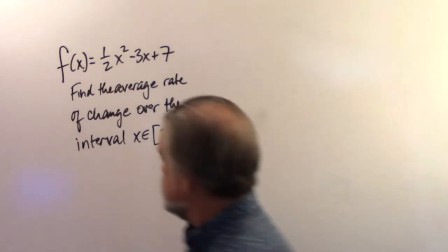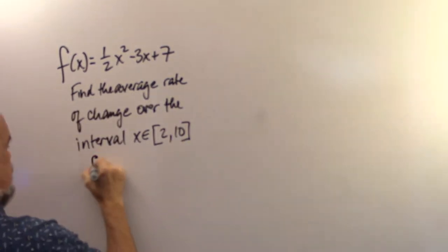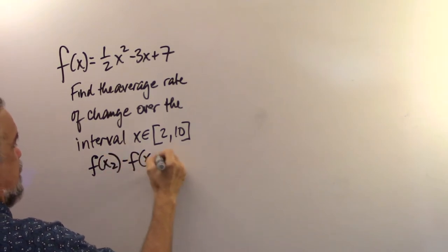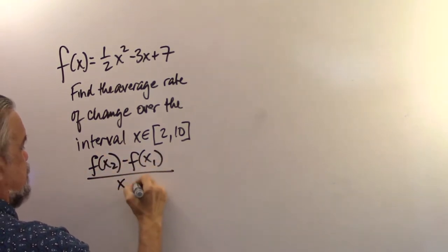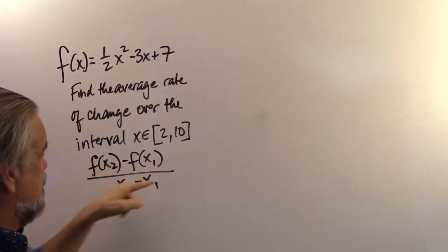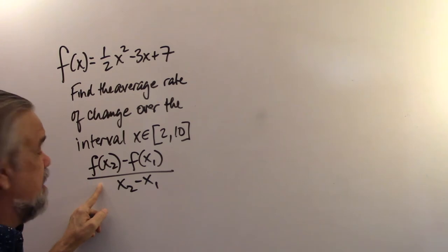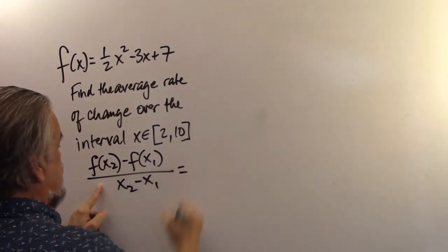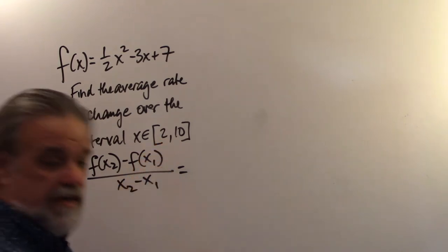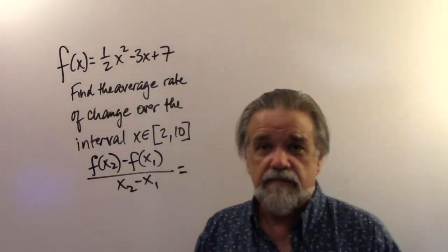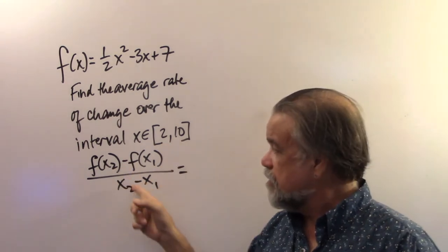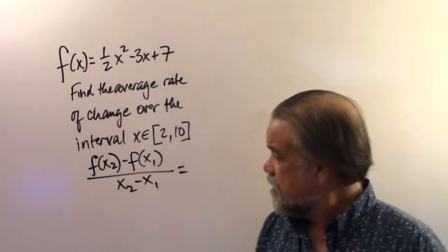Let's write it using f. Let's write f(x2) minus f(x1) over x2 minus x1. That is the slope of our line, and it's also the average rate of change. Well, I know what x2 and x1 are. They're 10 and 2. And by the way, y'all, it doesn't matter which one you call x1 and which one you call x2 as long as you're consistent in this fraction.